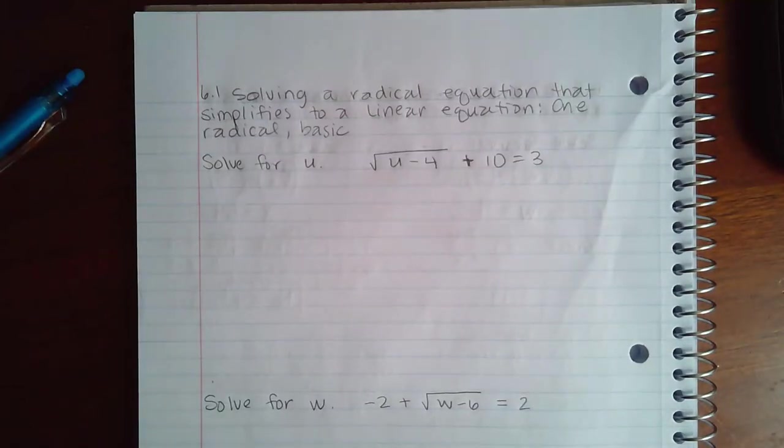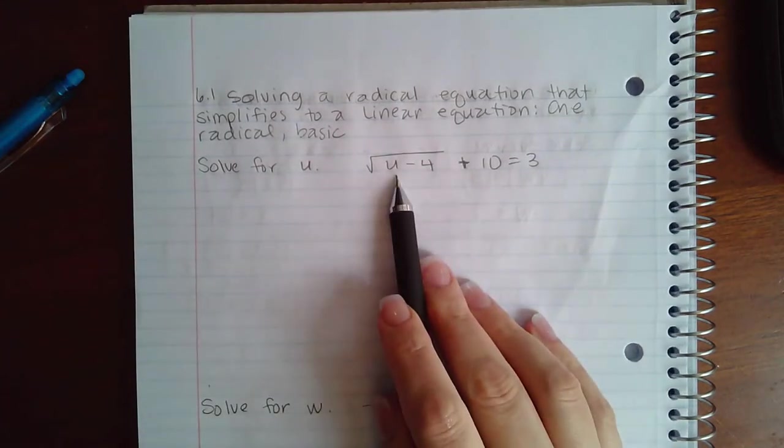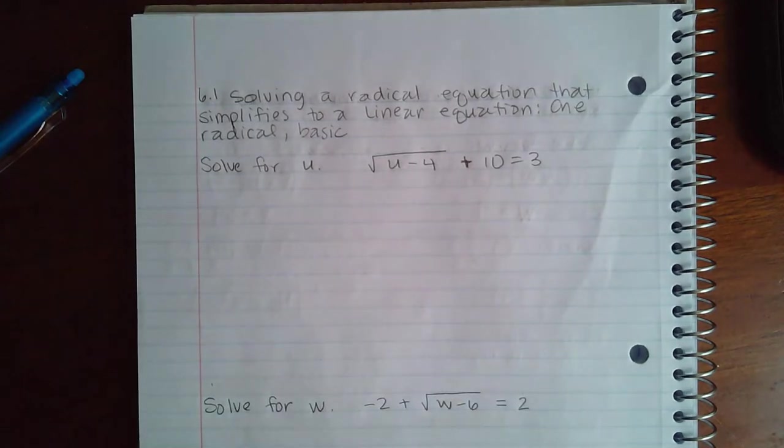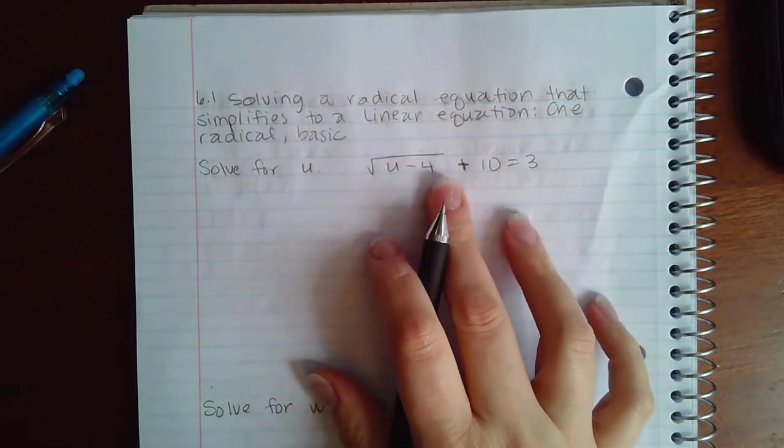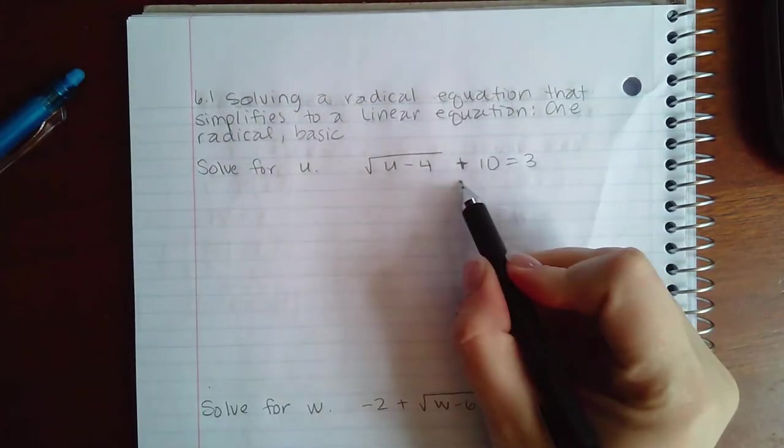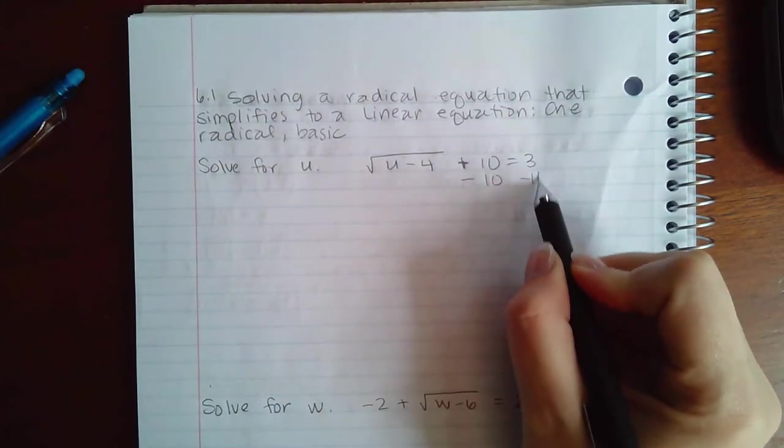Here we have solving a radical equation that simplifies to a linear equation, one radical basic. I want to eliminate the radical by using the power, but before I can do that I need to get this radical by itself. So the first thing I'm going to do is subtract 10 on both sides.